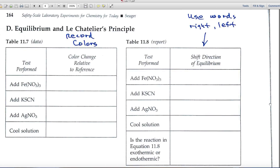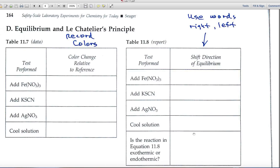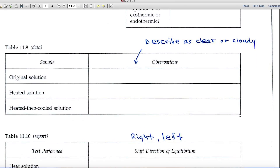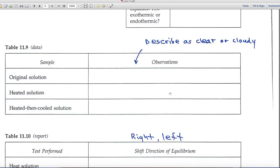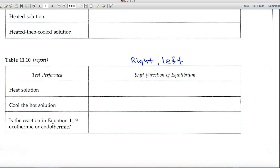Part D deals with equilibrium and Le Chatelier's principle. You'll be looking at color changes relative to a reference and recording red, brown, or whatever color the solution is. On the right, for the shift direction at equilibrium, you'll decide right or left. In table 11.9, you'll look for whether the solution is clear or cloudy — whether you see a precipitate or not. In the report part, again, use the words right and left for the shift direction of equilibrium.